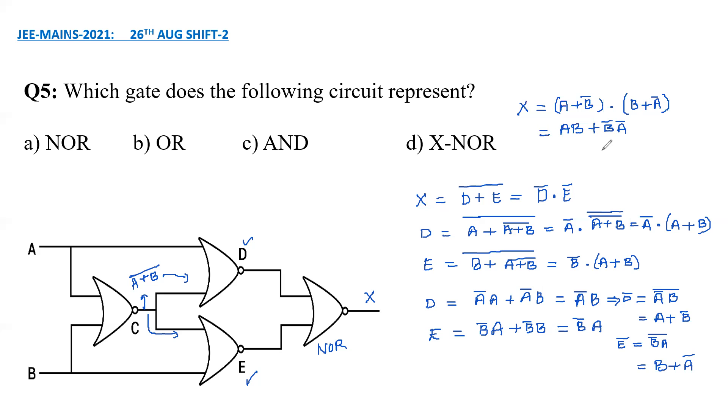So if you draw the truth table here, A, B, and X. 0, 0, 0, 1, 1, 0, 1, 1. So when both are 0s, the X will be 1 because A bar B bar will be 1. And when one of them is 0, the other is 1, the X will come out to be 0. We can check that. And when both are 1 also, it will yield 1. So this is nothing but exclusive NOR gate. So the answer is option B. I hope you have understood this. And we will upload more questions very soon.